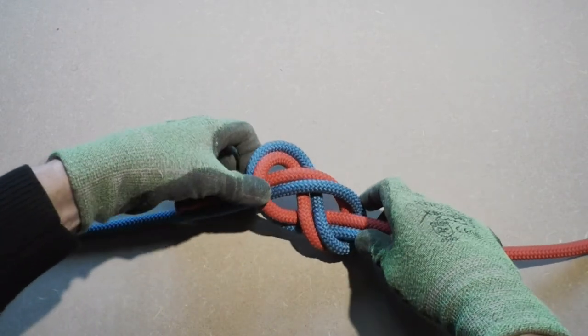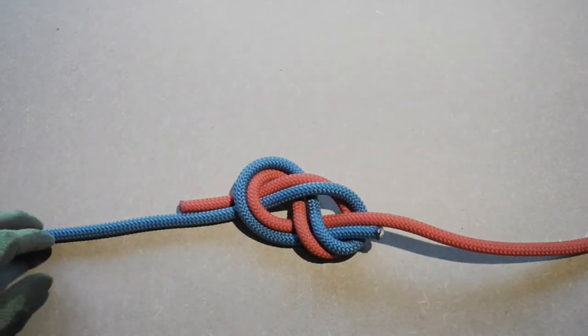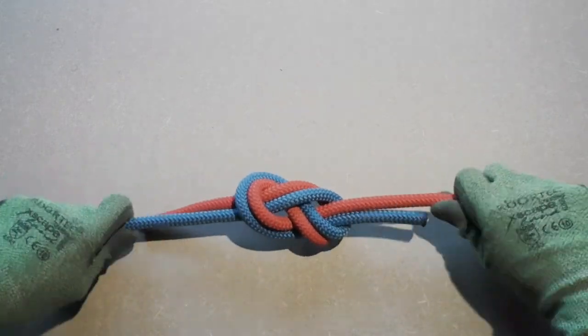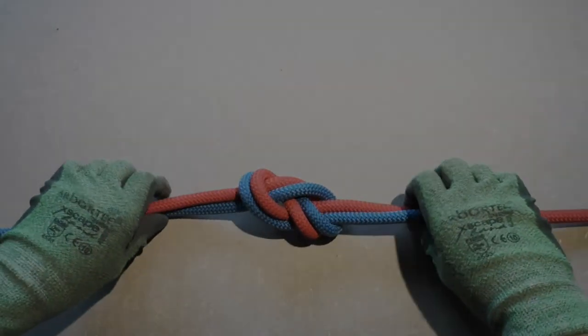You finalize the Figure 8 Bend by pulling the blue rope through the two combined loops on the right side of the knot. Now dress the Flemish Bend and then tighten it.